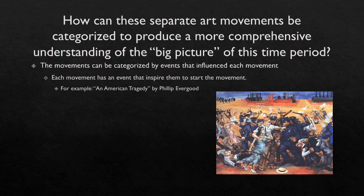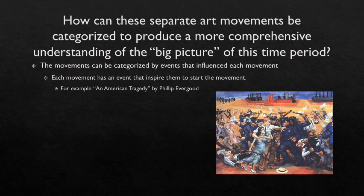What happened there was a few workers were killed by police and about a hundred others were injured. You can see how this artist was able to show what was going on in that year through just one simple painting. That's how you can categorize each movement — by the events that influenced them.